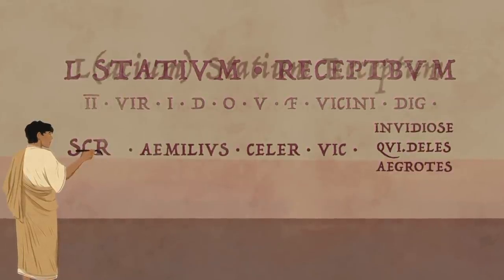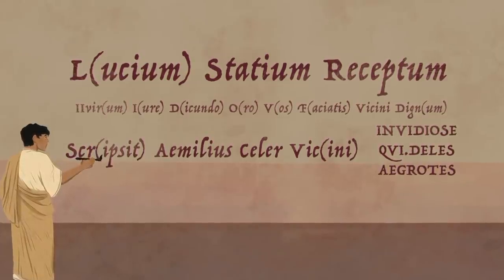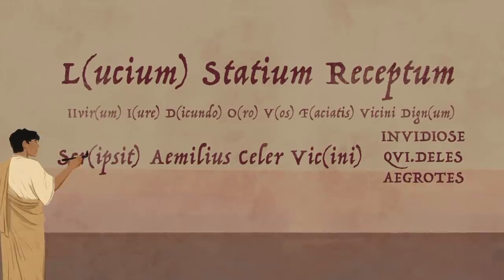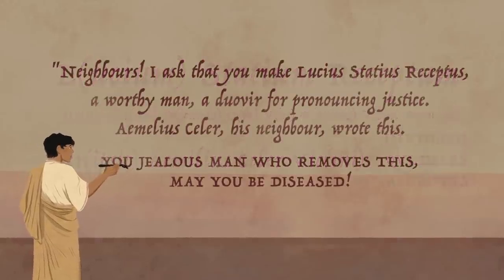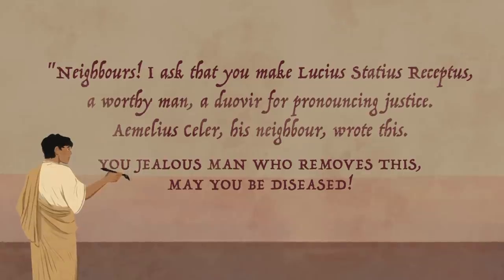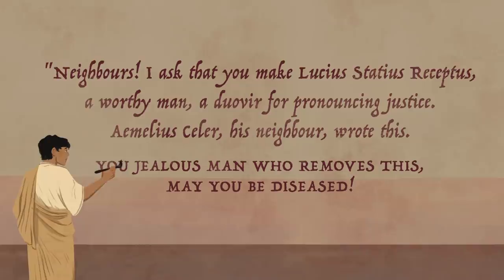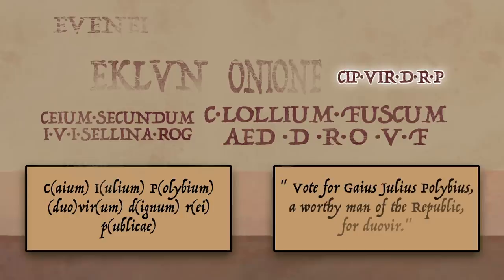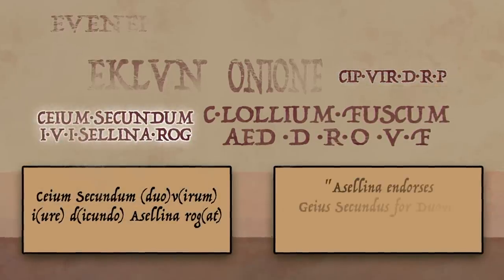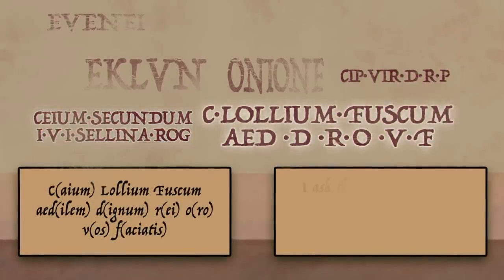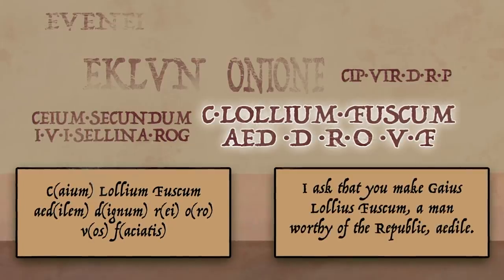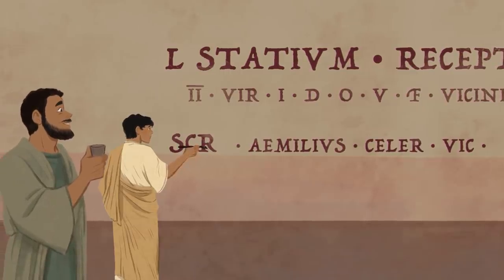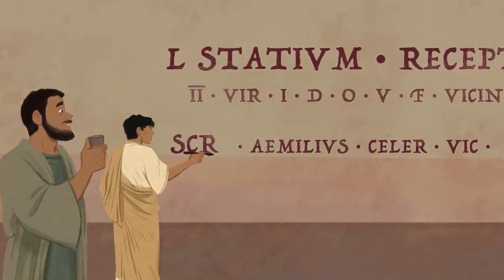One example translates to: 'Neighbors, I ask that you make Lucius Tedius Receptus, a worthy man, a Duovir for pronouncing justice. Emilius Kaeler, his neighbor, wrote this. You jealous man who removes this, may you be diseased.' Another wall filled with posters states: 'Vote for Gaius Julius Polybius, a worthy man of the Republic, for Duovir. Asalina endorses Gaius Secundus for Duovir for pronouncing justice. I ask that you make Gaius Lulius Fuscus, a man worthy of the Republic, aedile.' Looking at records of who sponsored these posters, we find many local tradesmen — fruit sellers, porters, goldsmiths, bakers, fullers, and more.